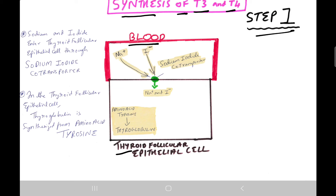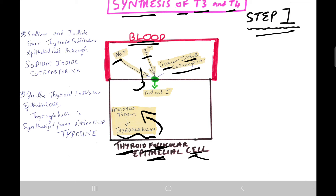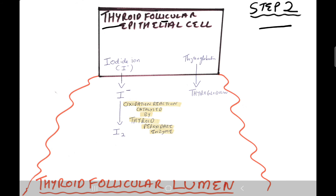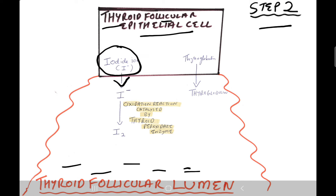Synthesis of T3 and T4 — Step 1: Sodium and iodide ions from blood enter the thyroid follicular epithelial cell through the sodium-iodide co-transporter. Inside the thyroid follicular epithelial cell, thyroglobulin is synthesized from the amino acid tyrosine.